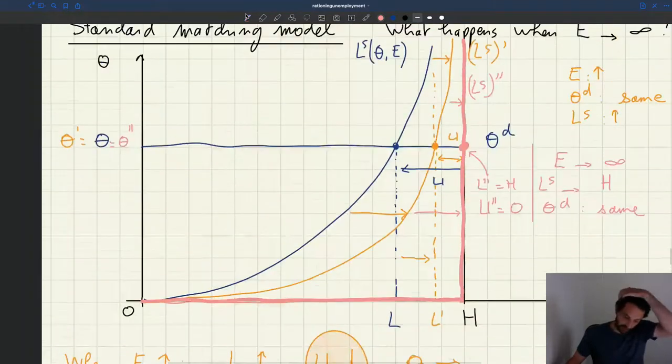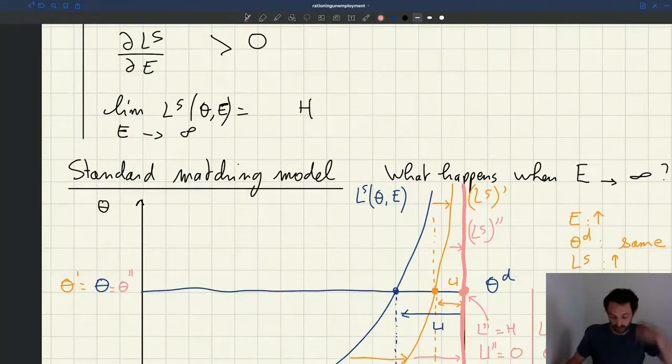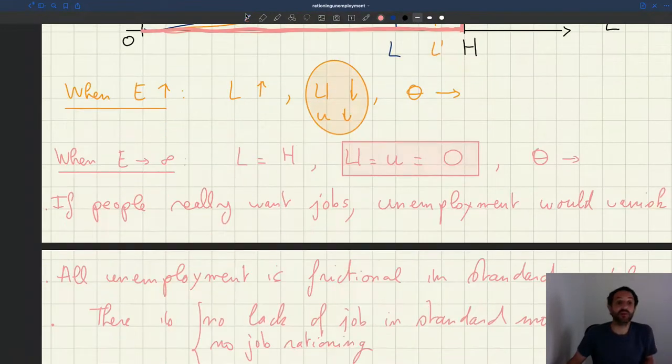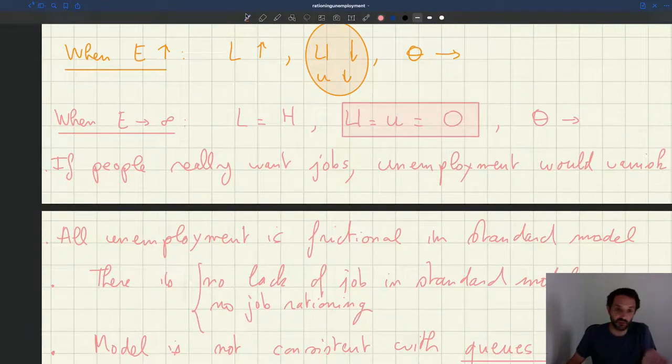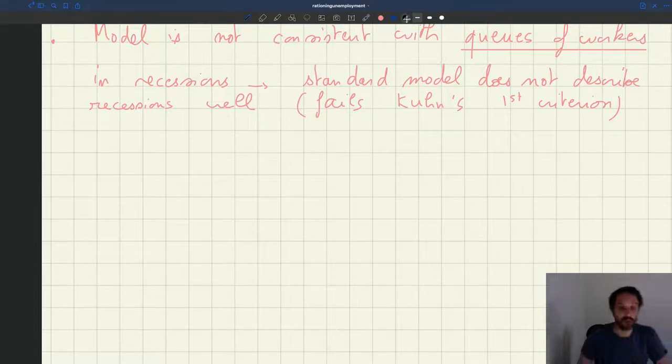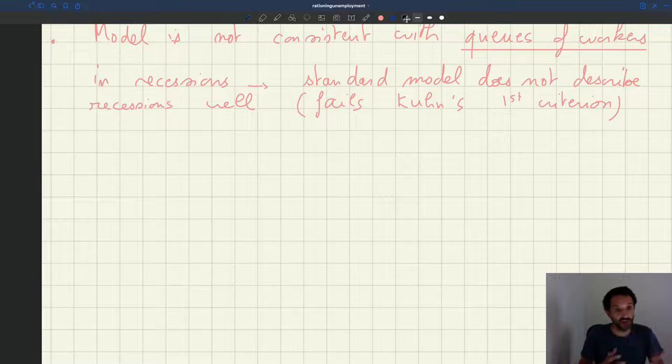So here we've seen what happens in the standard model when effort goes to infinity. We can also look at what happens in the rigid wage model, but you'll see it's exactly the same. The fact that wages are rigid or come from surplus sharing has no impact. The same analysis carries through, so we can do it very quickly. There are no worker queues, although wages are rigid.